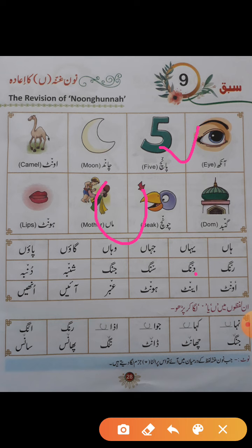شروع کی لائن میں ہم نے نون غنہ چار الفاظ میں پورا پورا بنایا ہے۔ اس کے بعد جہاں جہاں نون ہے وہاں وہاں ایسا نشان لگائیں گے۔ یہ والا ورک آپ کو اپنی کاپی میں کرنا ہے۔ آپ کا پیپر انسائٹ سے بھی آئے گا — جیسے آپ کو یہ ایکسرسائز دی، تو جنگ، چھاٹ جیسے اوپر والے الفاظ بھی دے سکتے ہیں۔